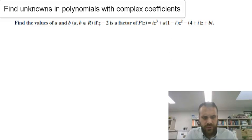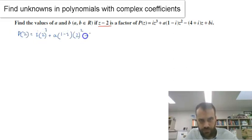Now if we've got z minus 2 as a factor, then P(z) is going to be equal to 0 when z is equal to 2. So let's try that out first. Alright, so I've got my 2's in there. Let's just fix them up a little bit.